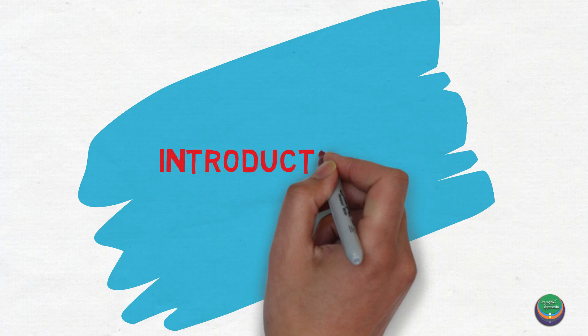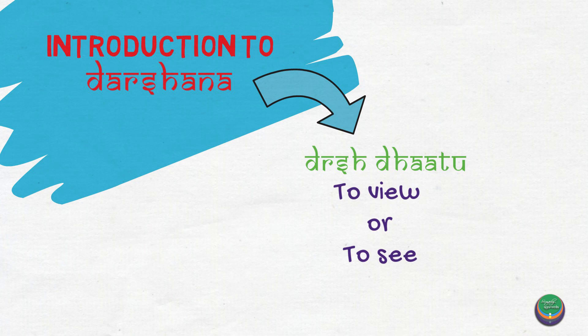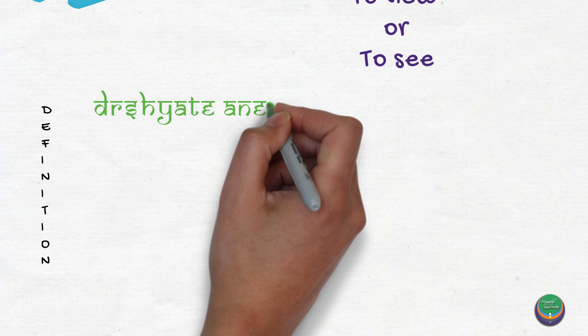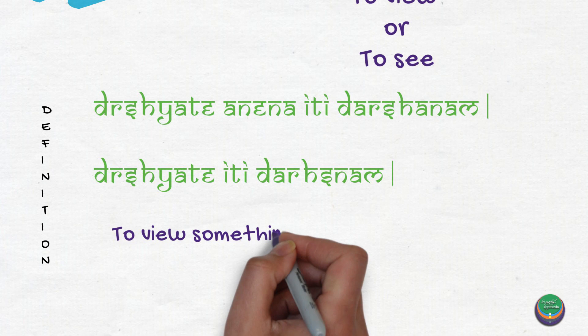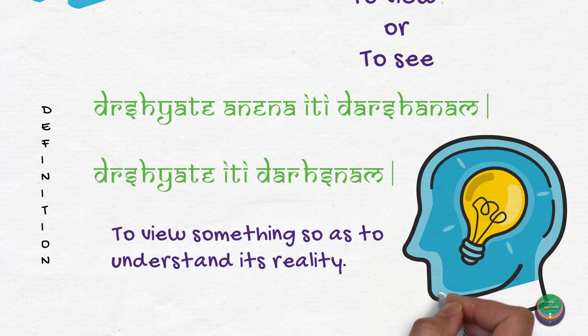Namaste. In this video, we are going to deal with the introduction to darshanas. The term darshana is derived from drish dhatu, which means to see or to view. Its definition goes as follows: drishyate anena iti darshanam and drishyate iti darshanam. It is the process through which something is viewed to understand its reality. We must understand that darshana does not simply mean to see, but rather means to understand reality in a proper way.